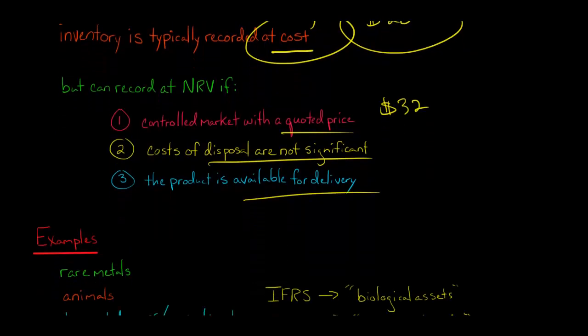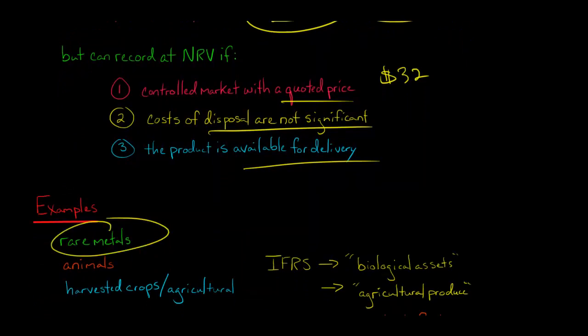Let me give you some examples. Rare metals is one example where you record at net realizable value. Animals, like animals on a farm, and crops or agricultural produce that comes from the animals.